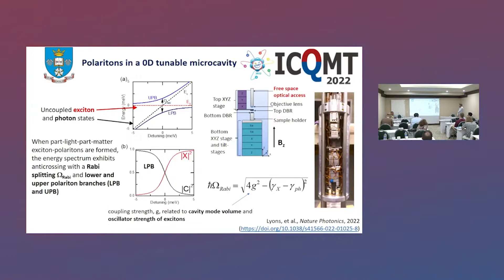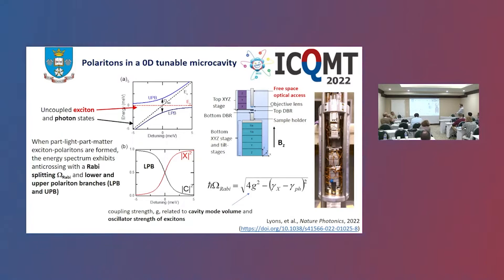Most of our work is done in a zero-dimensional tunable microcavity. When we place a highly absorptive material into our cavity — here is a graphic and also an actual photo — we have a series of eight piezo stages: X, Y, Z in both top and bottom, which control the bottom DBR and the top DBR. We also have two tilt stages which ensure our confinement between the two DBRs is maximal. When everything is aligned, we just tune the Z stage to bring the cavity mode into resonance with our exciton.